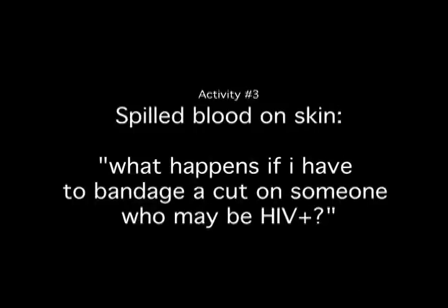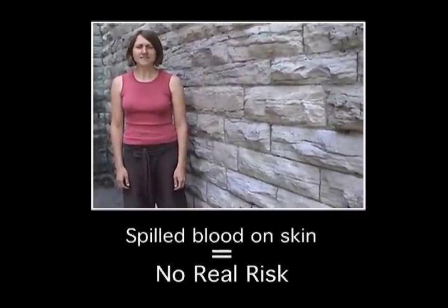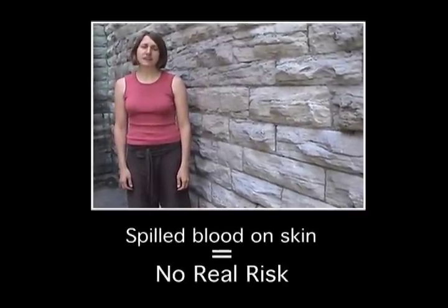Activity number three: spilled blood on the skin — as in, what happens if I've got a bandage on a cut on someone who might be HIV positive? This is a no risk activity. Healthy skin provides a solid barrier against the HIV virus. Even if infected blood were to fall on an already open wound, the chances of HIV transmission are very, very low, because blood flows out of the body, not into it. Of course, it's always a good idea to wear gloves when giving first aid, just to be safe.